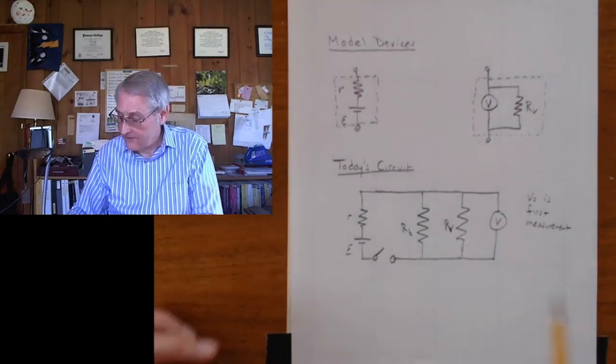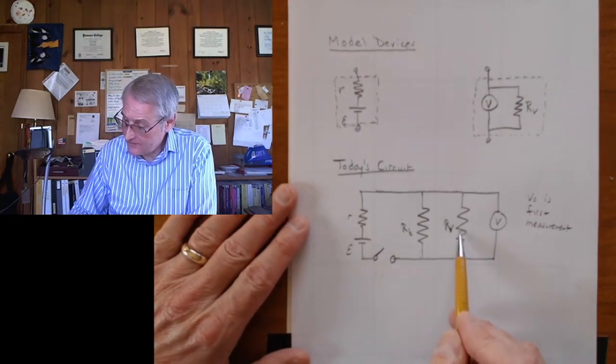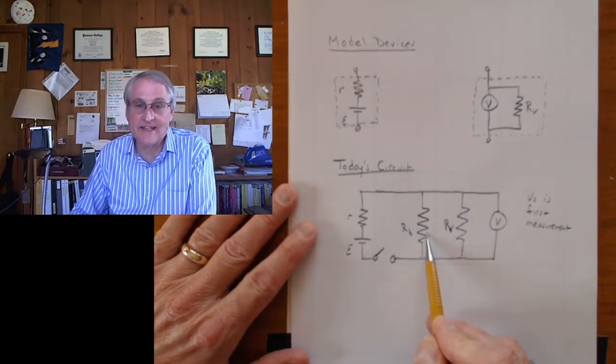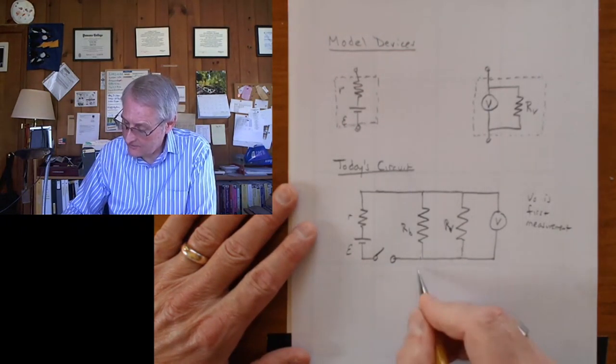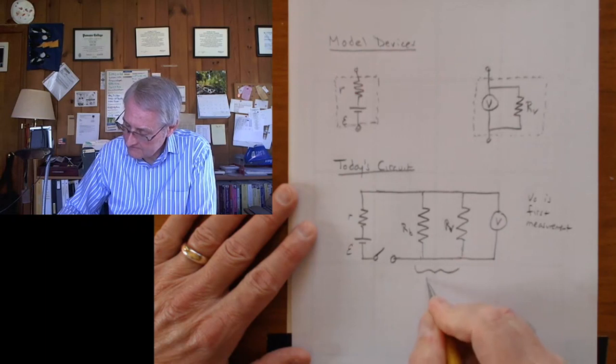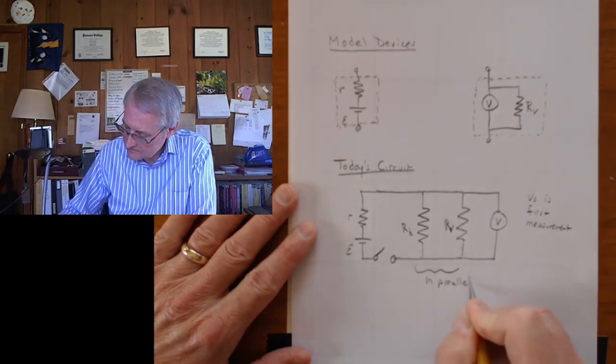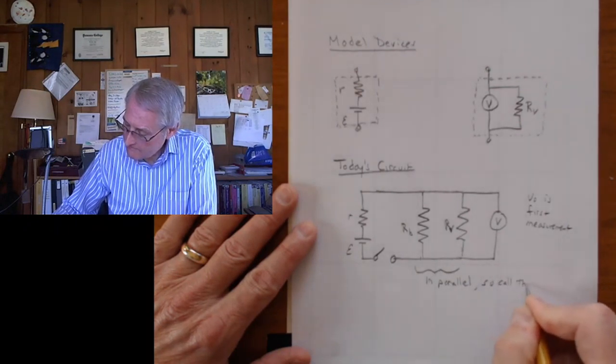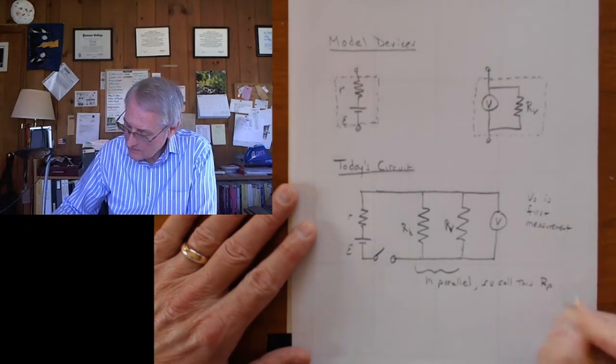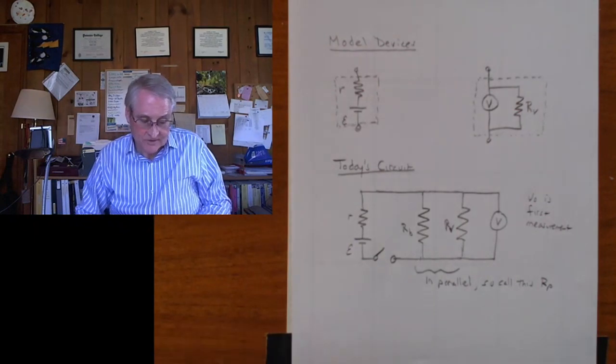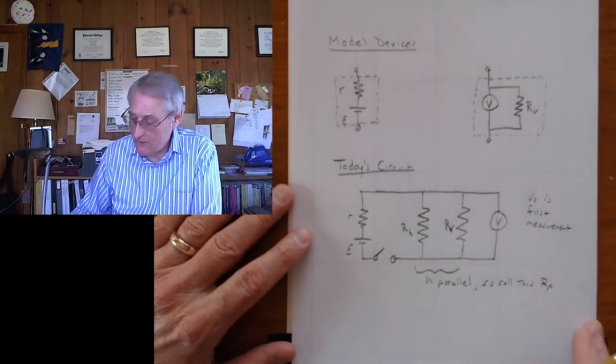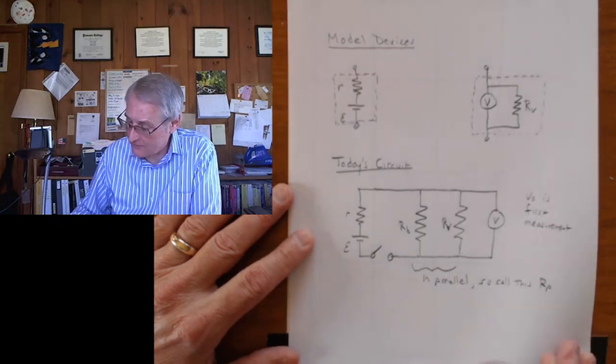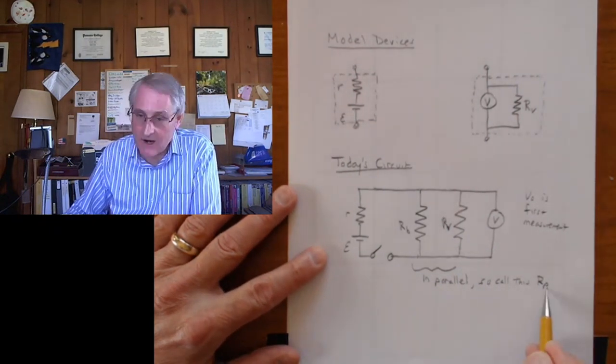Now when you do this, we have the internal resistance of the voltmeter in parallel with the resistance of the decade box. So these two, you can see, are in parallel. So we'll call this R sub P. Now you probably remember from the lab after Ohm's lab. We have resistors in series in parallel, and P for parallel.